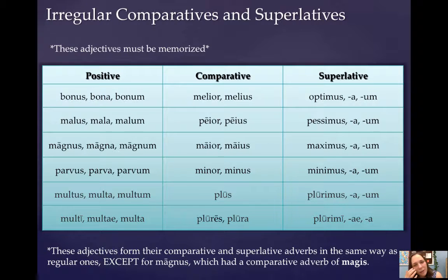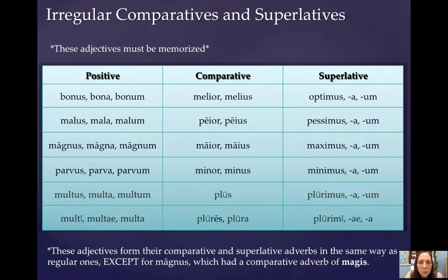Parvus, parva, parvum, meaning small, in the comparative becomes minor, minus, which means smaller, and then minimus, minima, minimum, which means smallest.